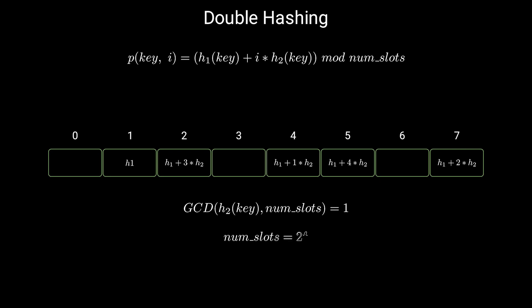A convenient way to satisfy this condition is to choose the size of the array to be a power of 2 and design the second hash function to always produce an odd number. Since the size is a power of 2, its only divisor is 2, so any odd number is relatively prime to the size.